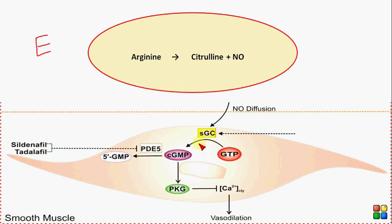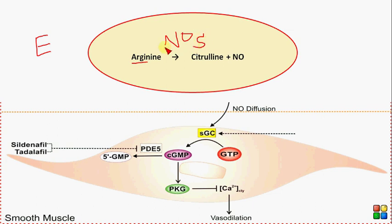On proper stimulation, arginine in the vascular endothelial cell is metabolized to citrulline and nitric oxide. This reaction is catalyzed by endothelial nitric oxide synthase (eNOS), which is present inside the vascular endothelial cell and catalyzes the conversion of arginine into citrulline and nitric oxide.